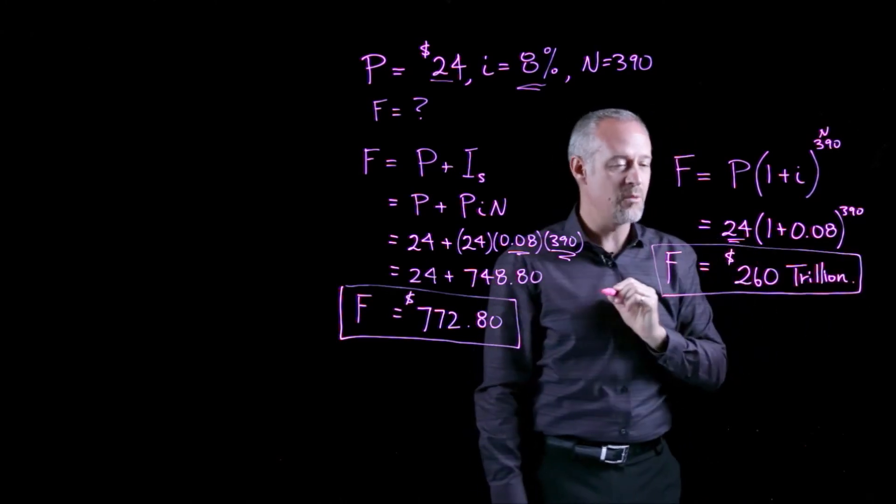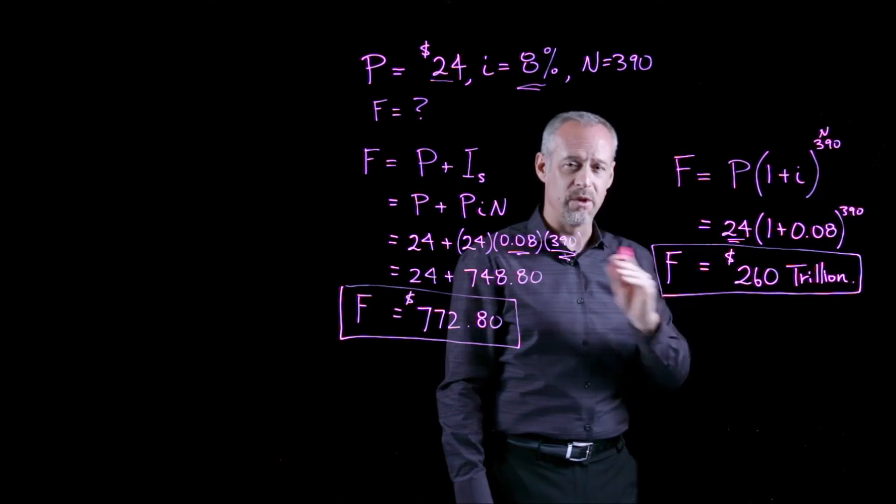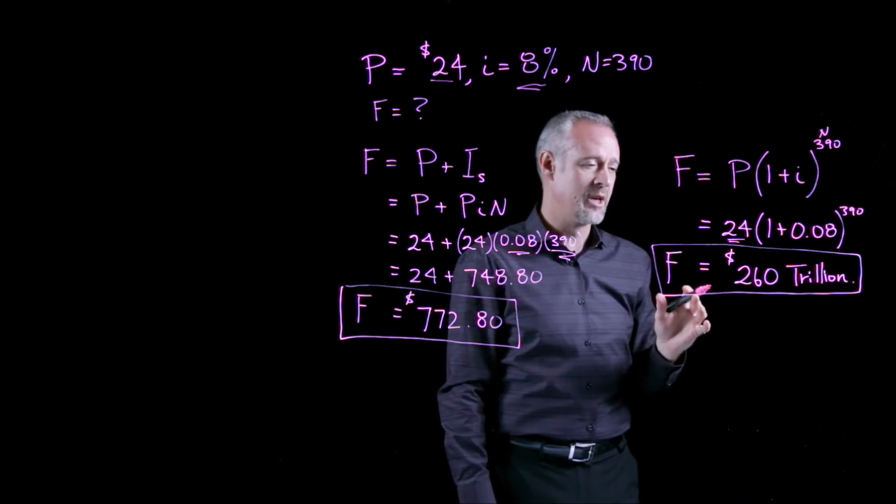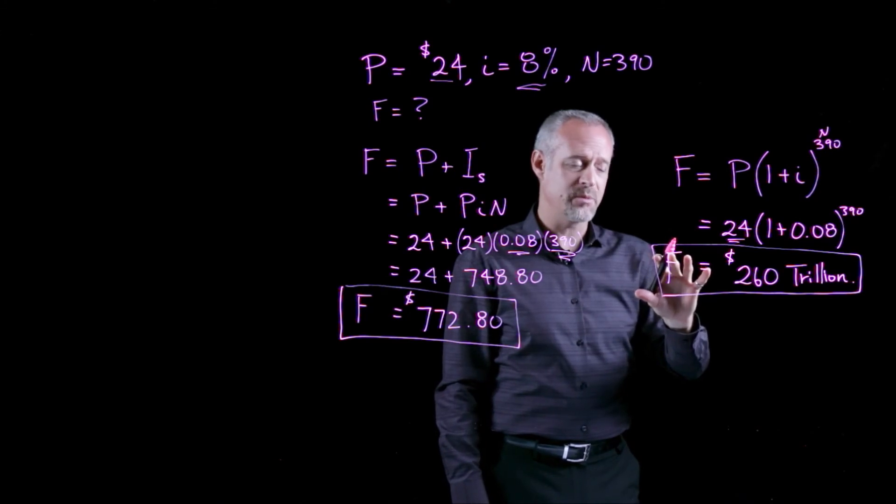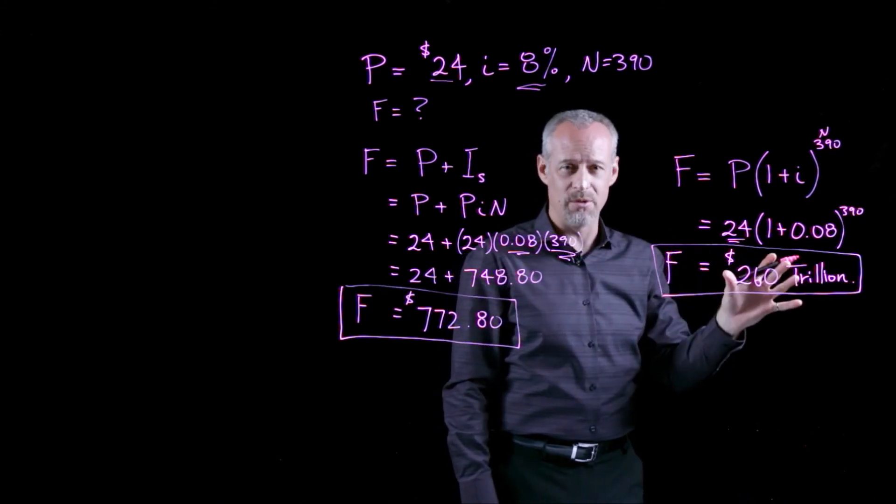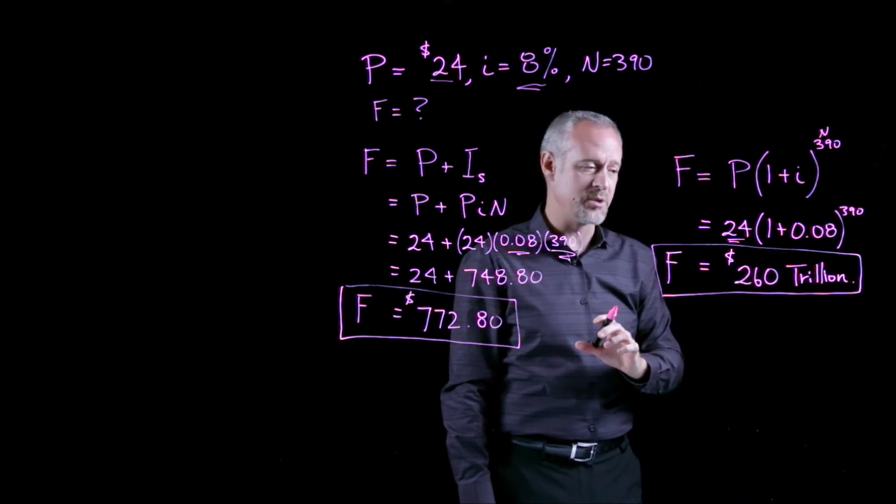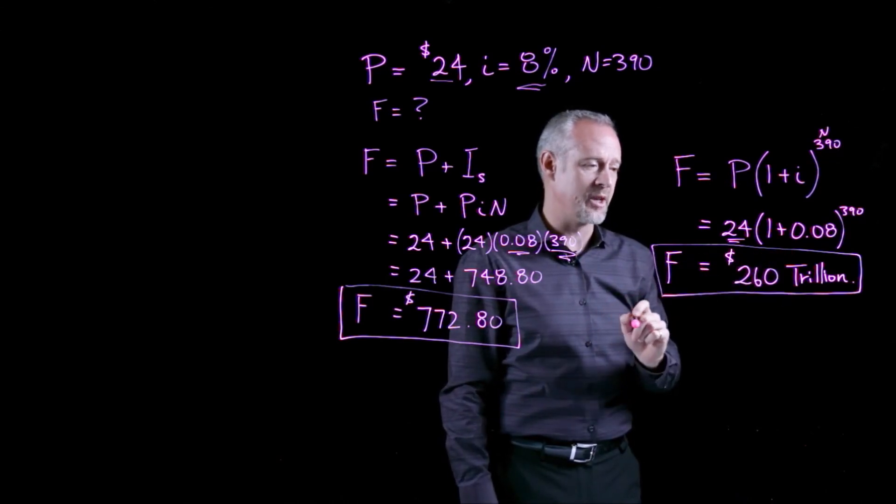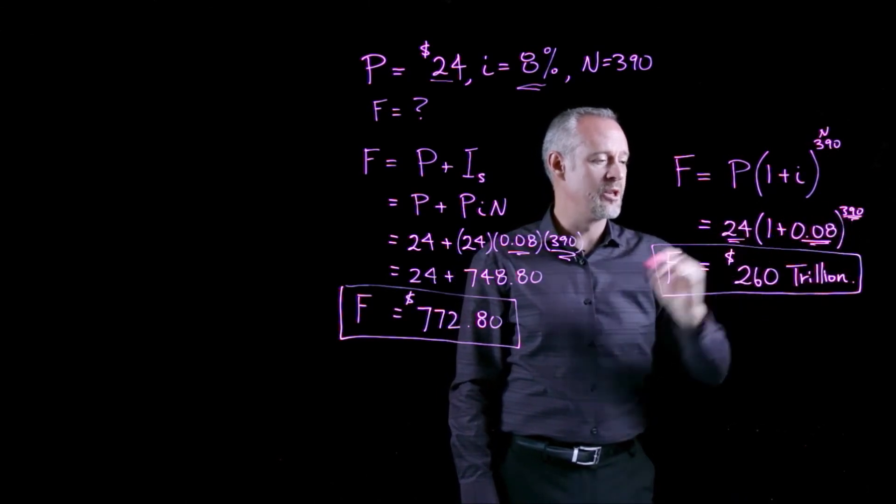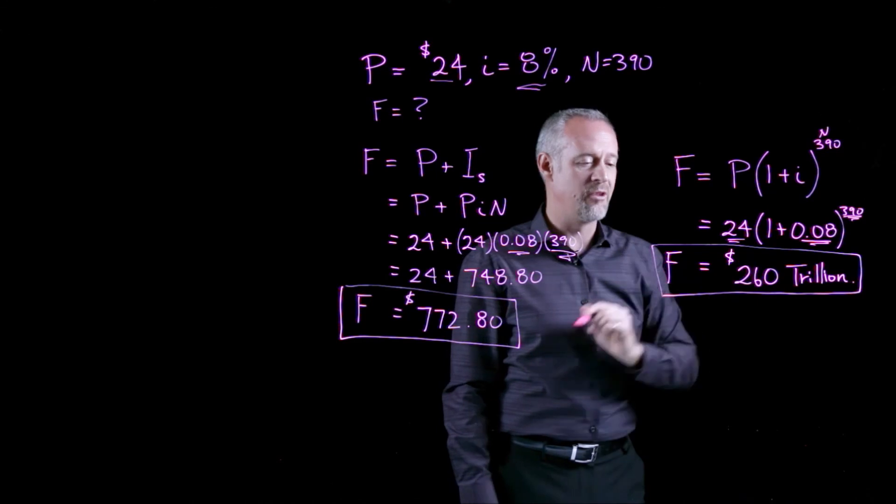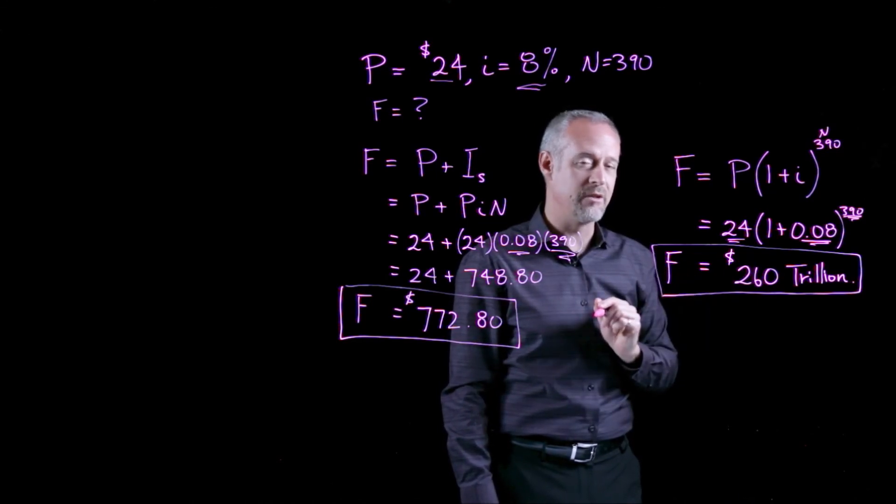So, you can see why this problem is often used to illustrate the difference between simple interest and compound interest. The future amount of this investment is an incredible sum in comparison to the simple interest. Compound interest at 8%, fairly high interest rate, very large number of years, gives us a very large value for the future value of the $24 investment.